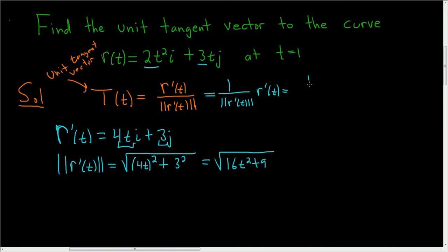So this is 1 over the square root of 16t² plus 9, times the derivative, which is 4ti plus 3j.